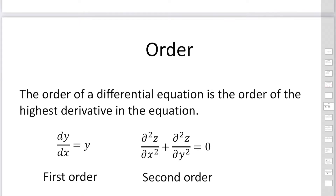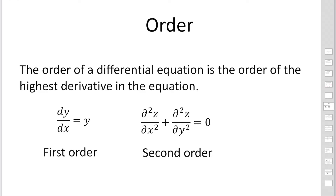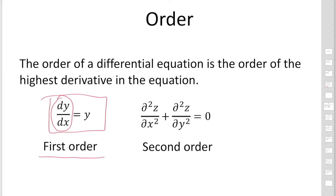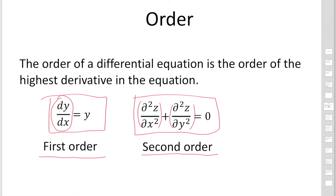Next, I'd like to explain the order of differential equations. The order of a differential equation is determined by the order of the highest derivative in the equation. For example, if you have a differential equation with a single first-order derivative, the order is first order. If you have a partial differential equation where the first term is a second derivative and the second term is also a second derivative, the highest order is second — so it is a second-order differential equation. By looking for the highest derivative, you can find the order of the differential equation.